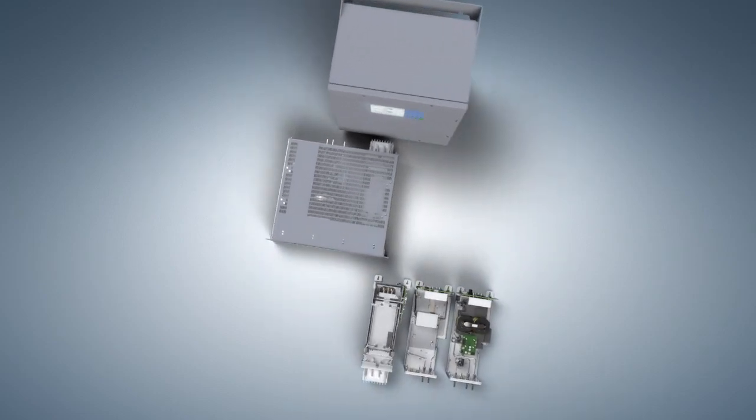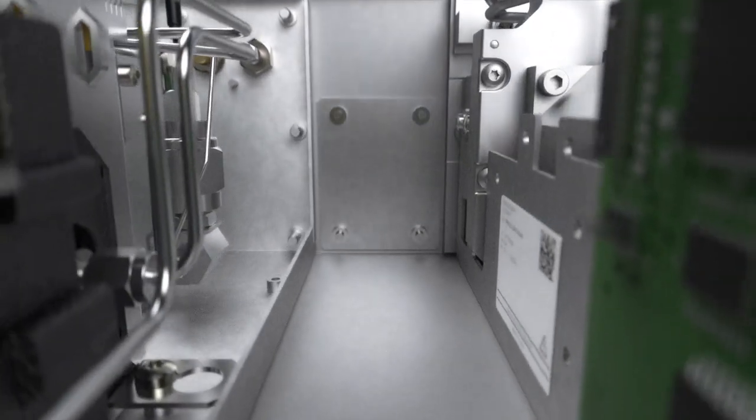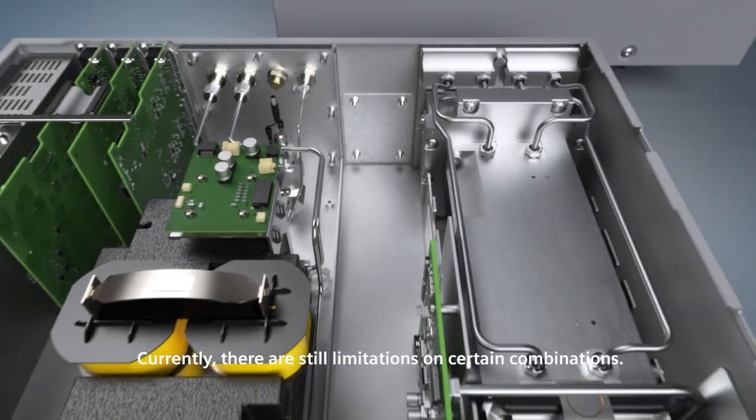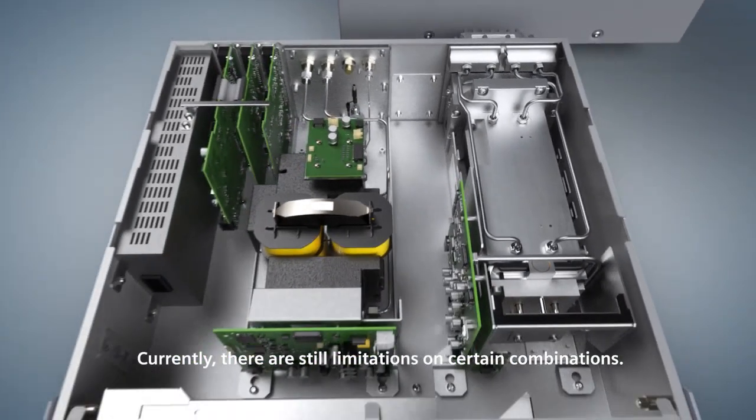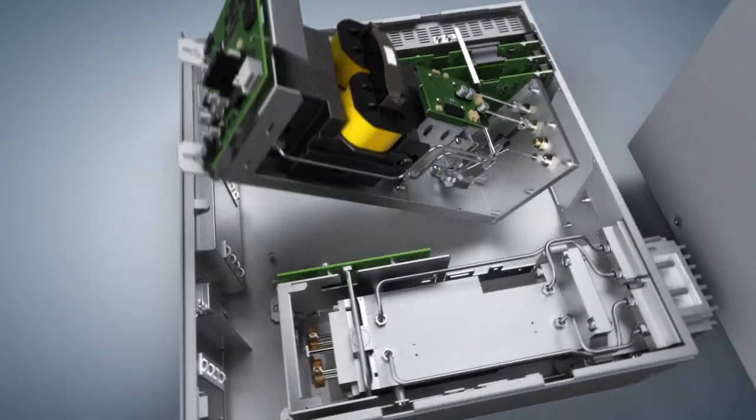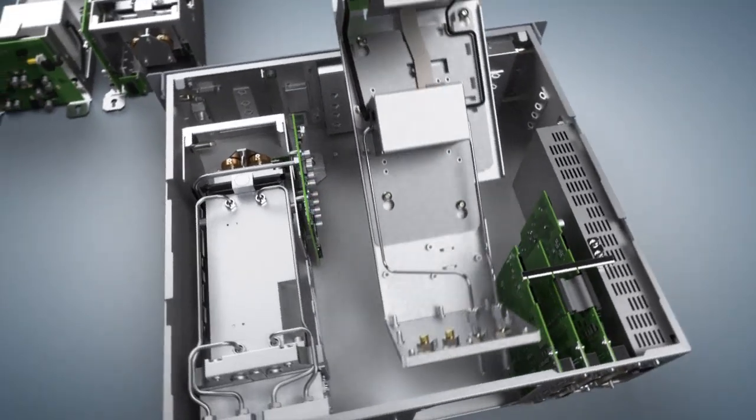Gas analysis has never been easier. The ZProcess GA700 is systematic in its modularity. Every housing type now offers space for two analyzer modules. You can combine the Oxymat 7, Ultramat 7, and Calomat 7 exactly as you need, and benefit from fast exchange of modules during retrofitting or conversion.